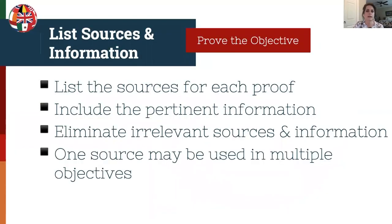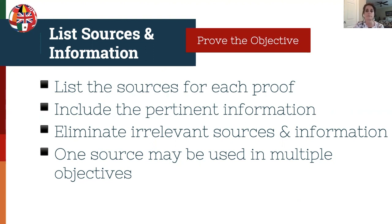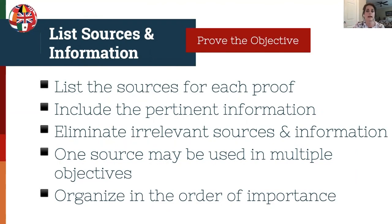One source may be used in multiple objectives, because most sources used in a research report help prove more than one event, fact, or relationship. Therefore, they need to be covered each time they bring about an important clue. This concept is a major stumbling block for many beginning writers of genealogical research reports. Our last bullet here is to organize all sources into an order of importance — by what is the most compelling source or by what is the flow of logic.